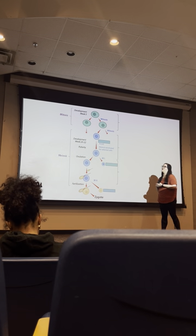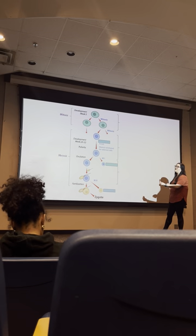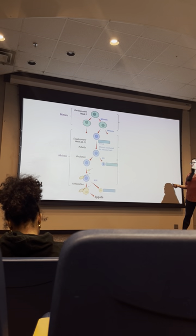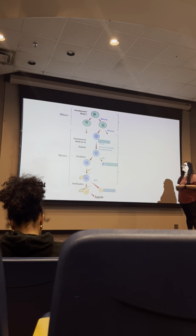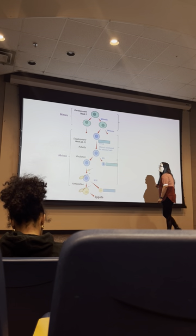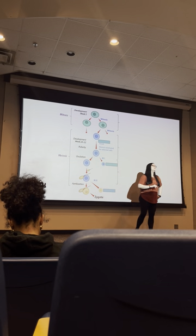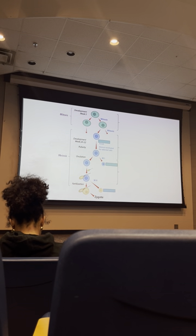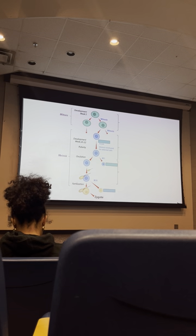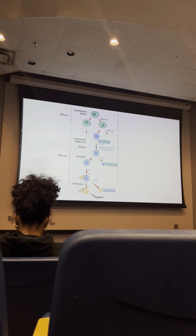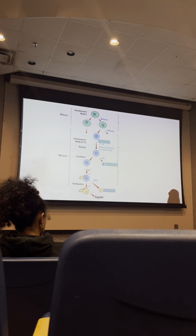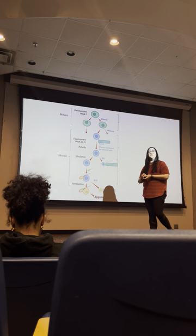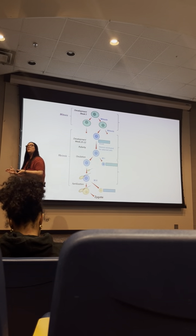Primary oocytes are arrested until puberty. Once puberty starts, we resume, but meiosis II only finishes if fertilization occurs. If fertilization occurs we form a zygote, which is diploid. We also see polar bodies produced as a byproduct of division — they are typically not viable. We really only make one good egg.